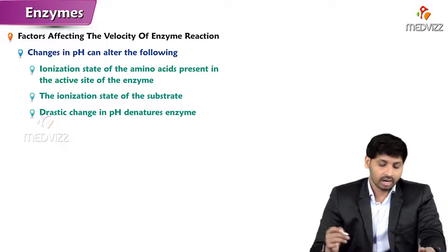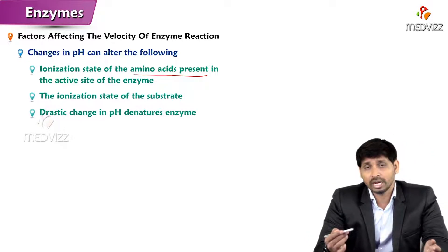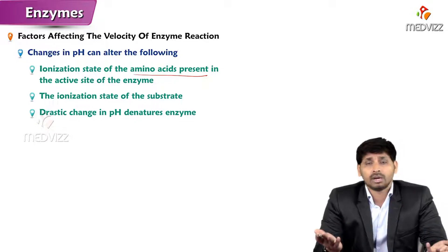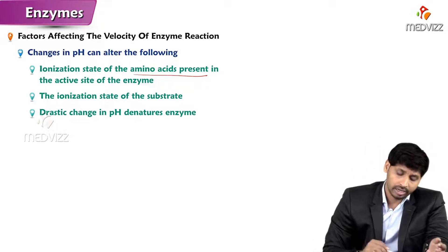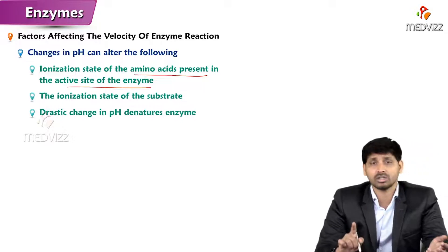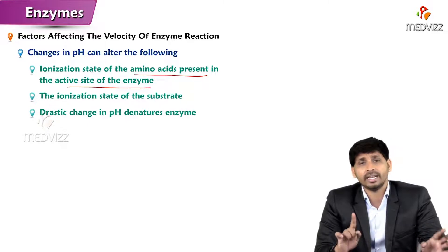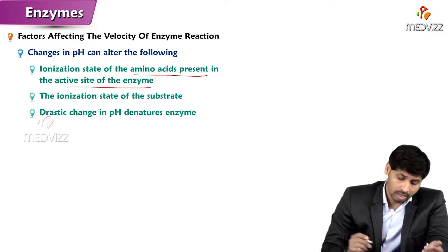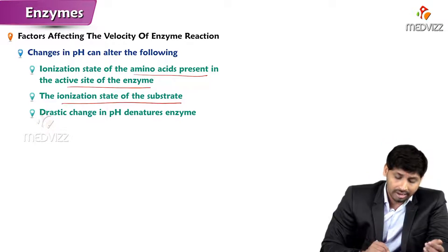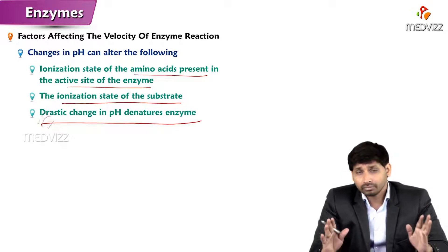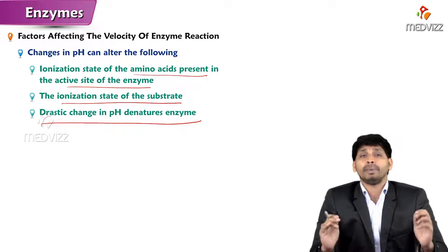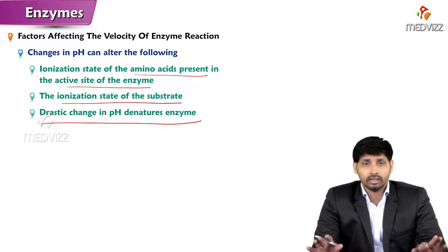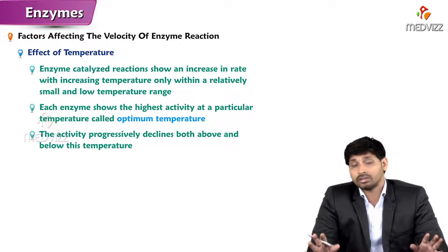Changes in pH alter the ionization state of amino acids in the active site of the enzyme — since enzymes are proteins made of amino acids that are amphoteric in nature. The active site is made up of 10 to 15 amino acid residues. A drastic change in pH denatures the enzyme. For metabolic reactions in the body, pH is mandatory — a slight change stops enzymes from working, leading to multi-organ failure and death. Acidosis and alkalosis are severe dangerous conditions.